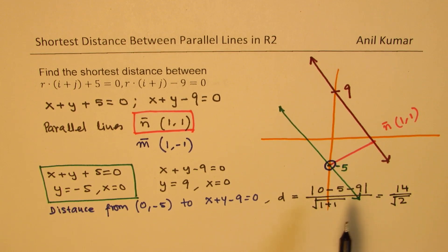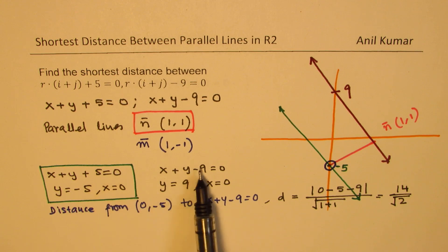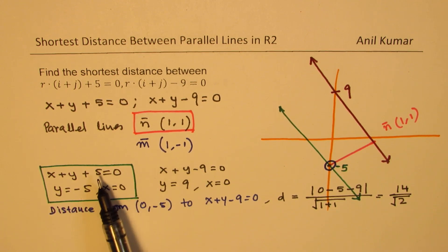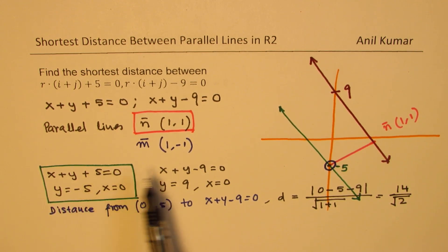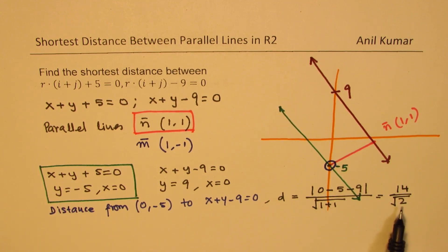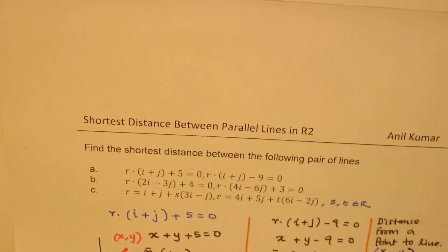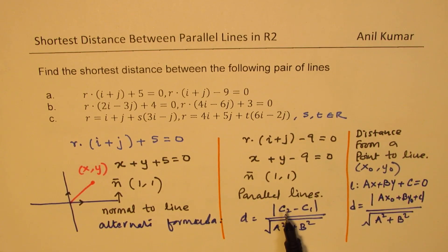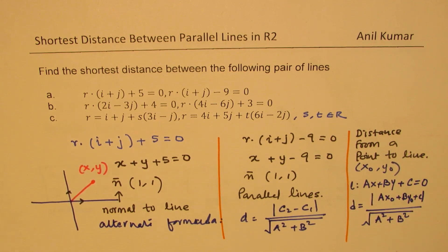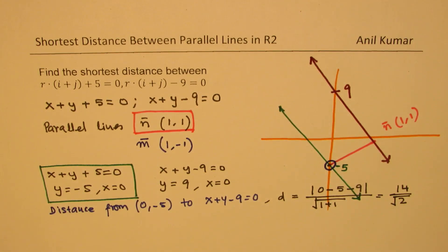Notice this is essentially the difference between c1 and c2: absolute value of (5 minus 9) equals 14, divided by square root of 2. Using the shortcut formula c2 minus c1 over square root of (a² plus b²) gives the same result.